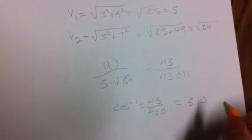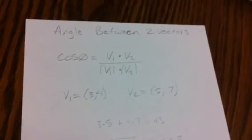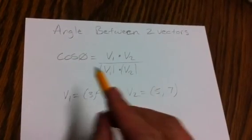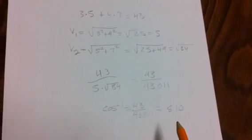All right, so that's the angle between these two vectors. We did all that, took the cosine inverse of it, and found that theta was equal to 8.1 degrees.